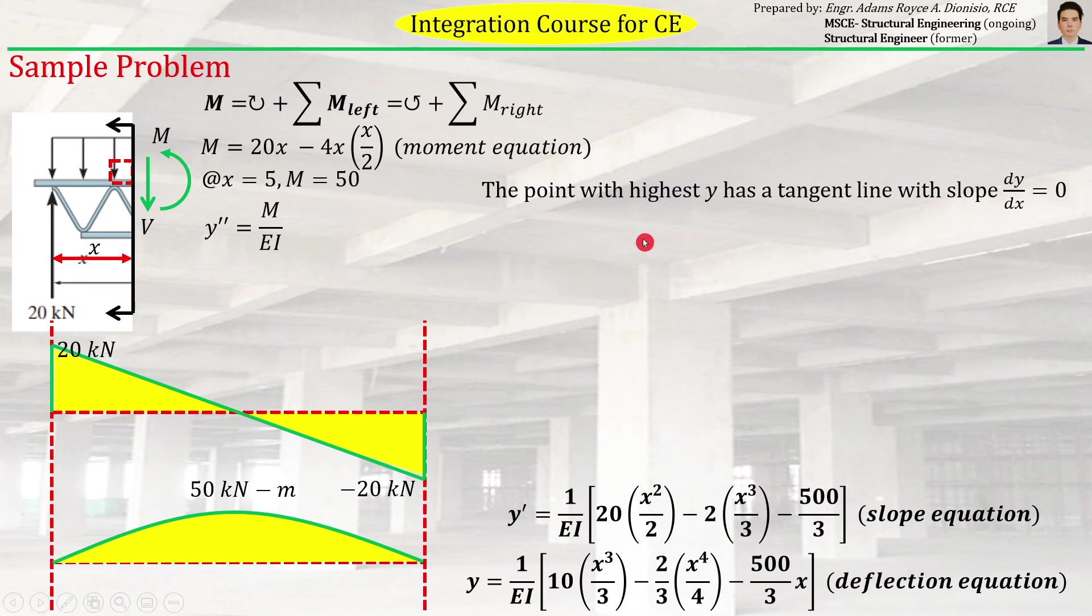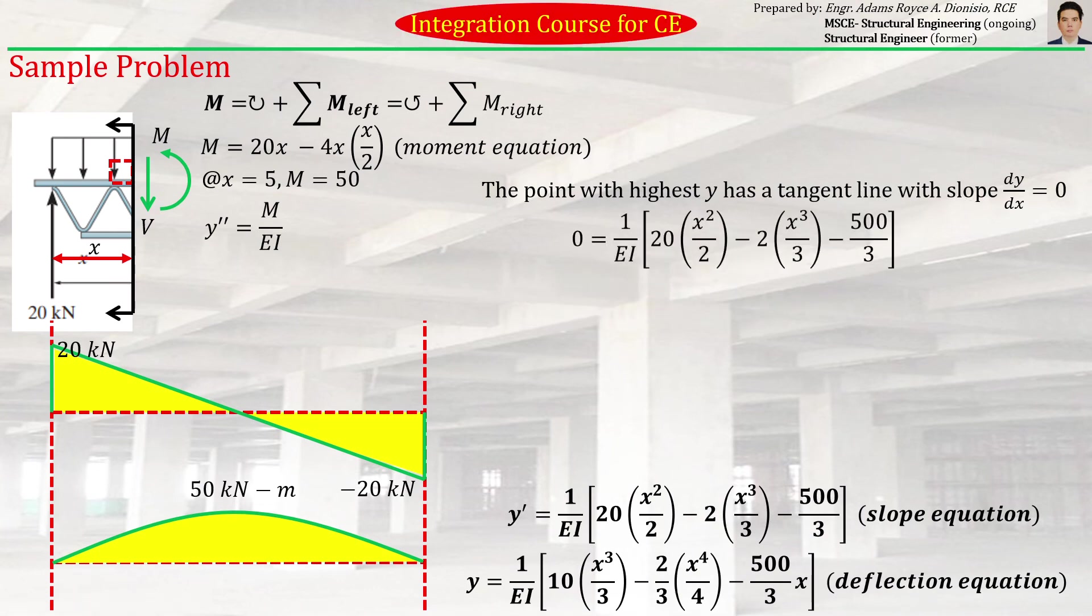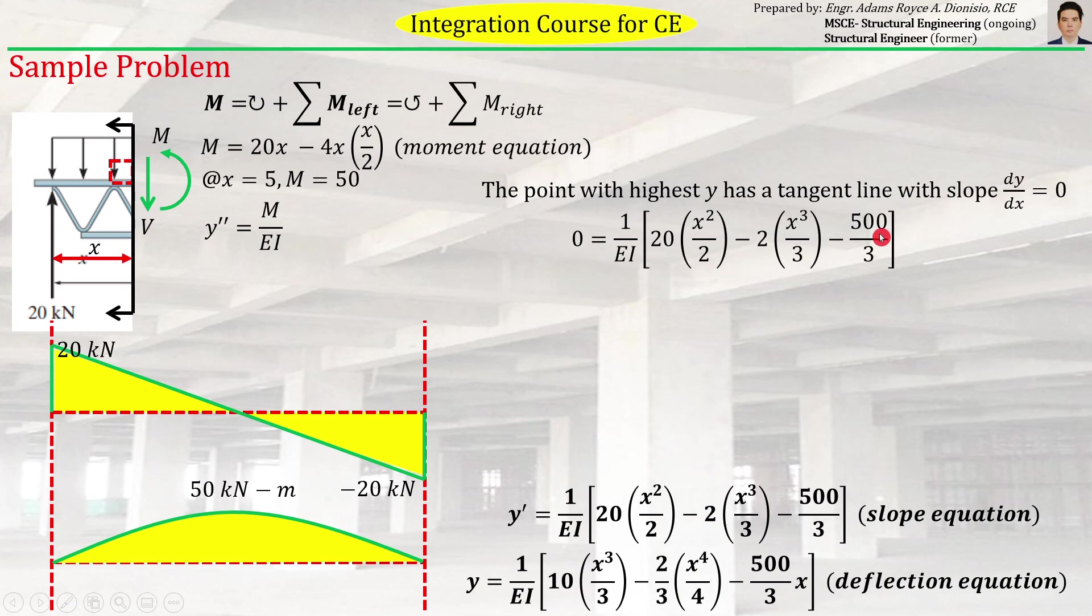Having these equations, we can now readily compute what is being asked in the problem, which is the maximum deflection. As I explained earlier, the point with highest y has a tangent line with dy/dx = 0. As we have seen, that point actually acts at the midspan or at x = 5. But if we use the slope equation to find that location, we can simply equate y' to zero, because the maximum deflection occurs at the x value where y' or θ equals zero.